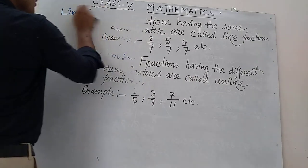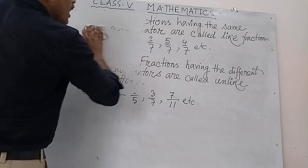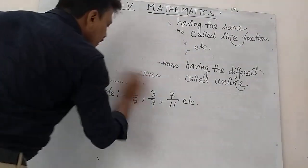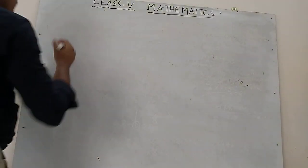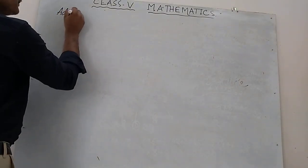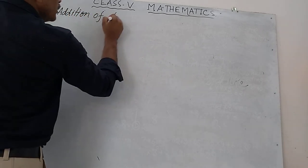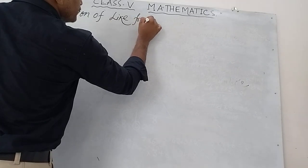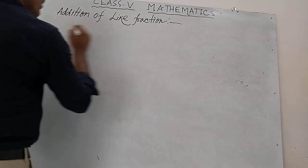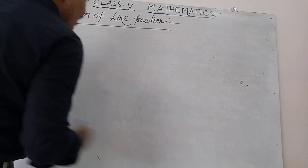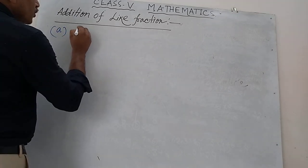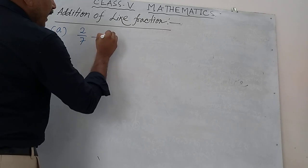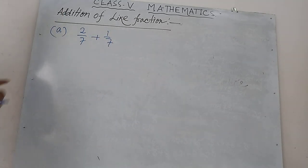Now we are going to learn how to add different types of fractions — first, addition of like fractions. Let's take a number: 2 by 7 plus 1 by 7. How do we add?